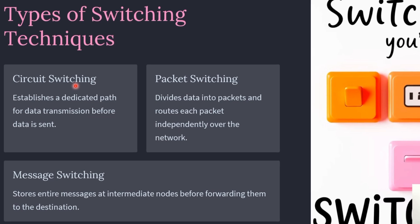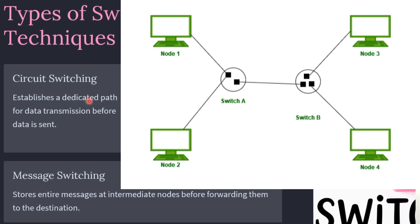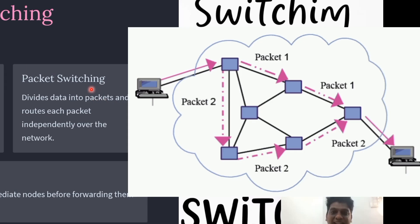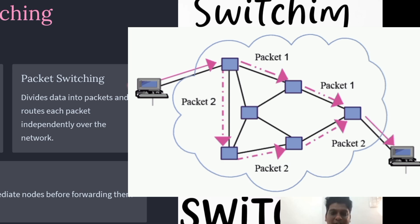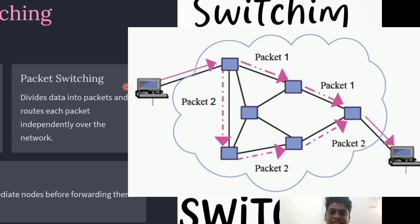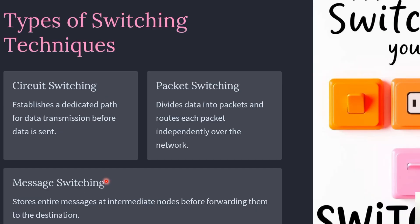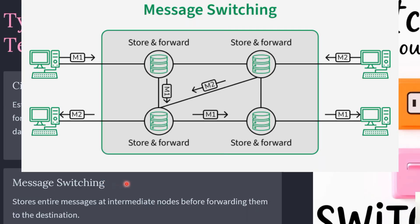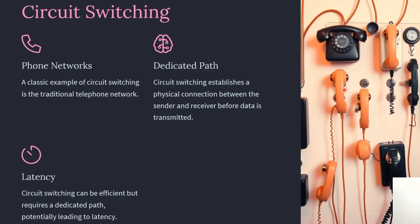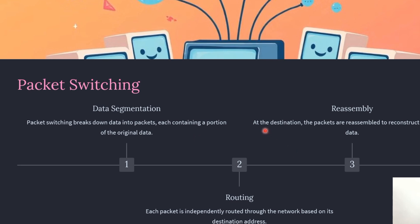In circuit switching, we establish a dedicated path between the sender and receiver before transmitting the data. A classical example is the traditional telephone network. Once the connection is established, the dedicated path remains in existence until the connection is terminated.